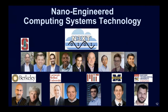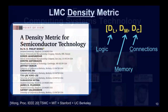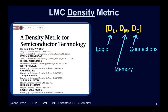A few years back we started working on the N3XT concept, and by now we have actual demonstrations. N3XT also forms the basis for a paper I co-authored on a density metric for semiconductor technology. Instead of calling our technologies five nanometer, three nanometer, two nanometer and so on, we propose expressing technology using a tuple of logic density, memory density, and connection density — DL, DM, and DC. I would very strongly encourage you to read this paper.